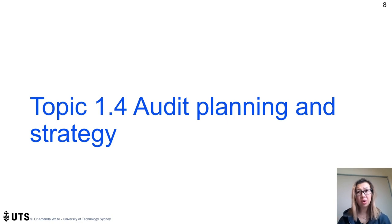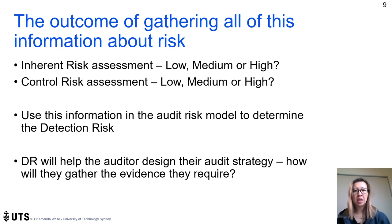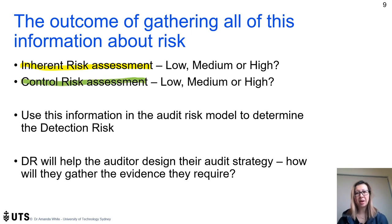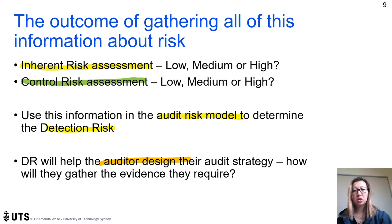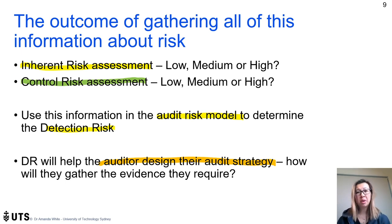All the information gathered feeds into the audit risk model to fill in our audit strategy and design our overall approach. We make an inherent risk assessment — low, medium, or high — and in future modules we'll make a control risk assessment on the same scale. Together these determine detection risk using the audit risk model matrix. Detection risk then guides how the auditor designs their strategy: how will they gather evidence, how much work is needed, and how detailed does it need to be?